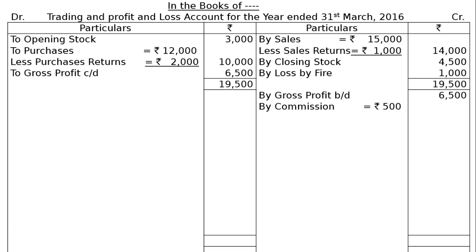By Commission, Rs. 500. Adjustment B states that commission of Rs. 100 has been received in advance for work to be done in the next year. So, less Advance Commission Rs. 100. This advance commission will be shown under the head Current Liabilities in the Balance Sheet. The net commission in the final column will be Rs. 400.